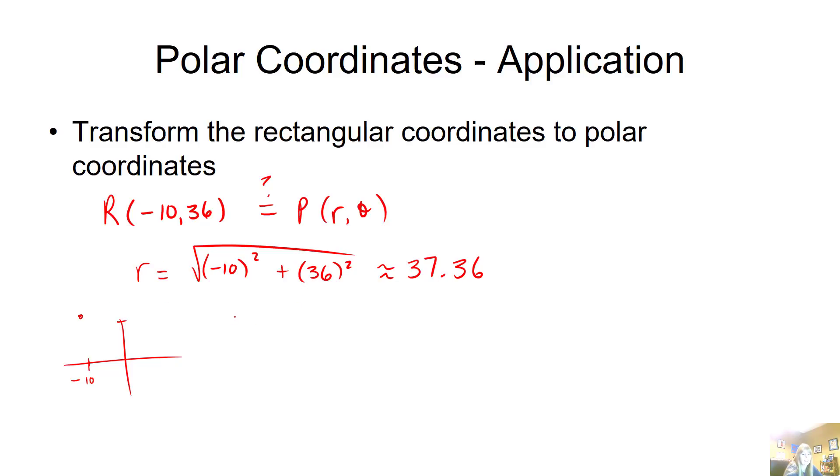And then noticing that if I graph this, this is actually negative 10 and then 36 up here somewhere. So I can see that my theta, since I'm in quadrant 2, I'm going to have to do the pi plus my tangent inverse of my y over my x. And again, throwing that in a calculator, I got 105.5 degrees. So my polar coordinate would be 37.36 and 105.5 degrees.